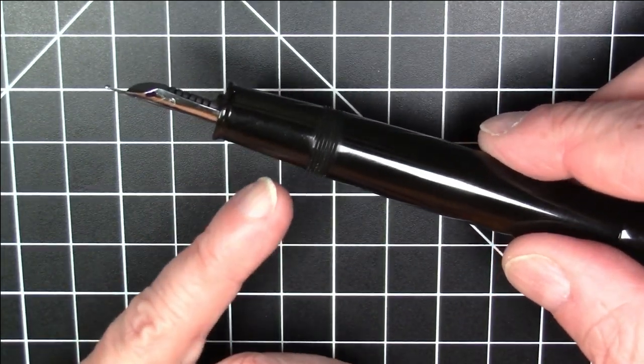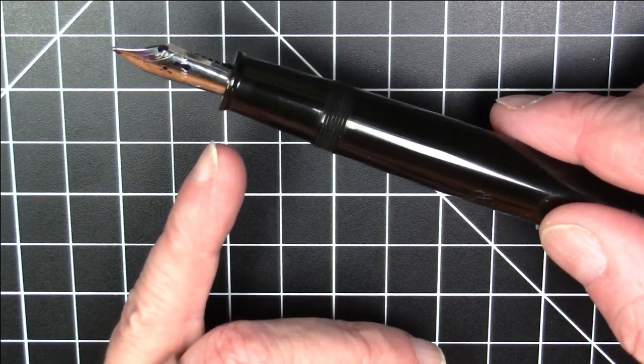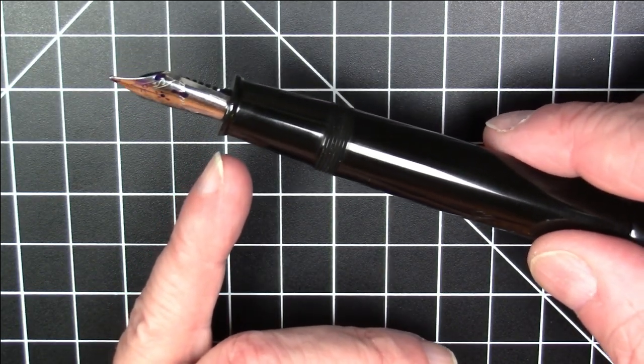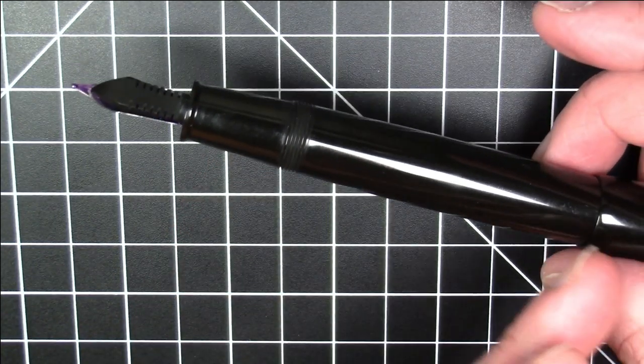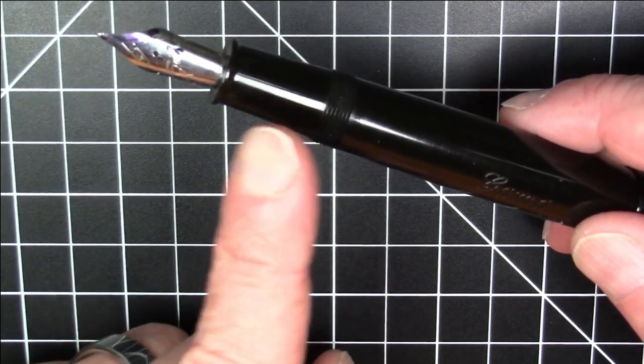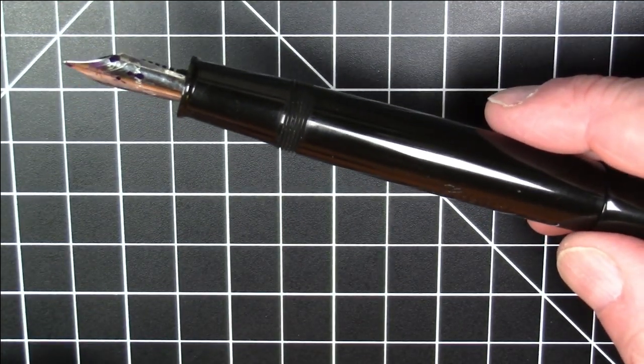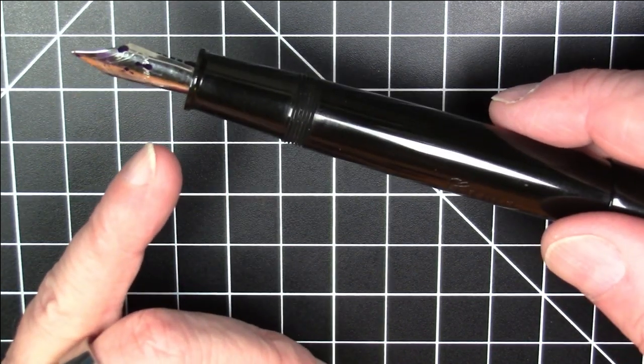The section is plenty long, nicely tapered, has a nice little lip here, which of course matches up with a ledge on the inside of the cap to ensure a good airtight seal. Again, we're talking about a very simple pen here. This is an eyedropper filled pen. You simply unscrew the section and fill up this whole barrel with ink, so it does hold a very large boatload of ink.